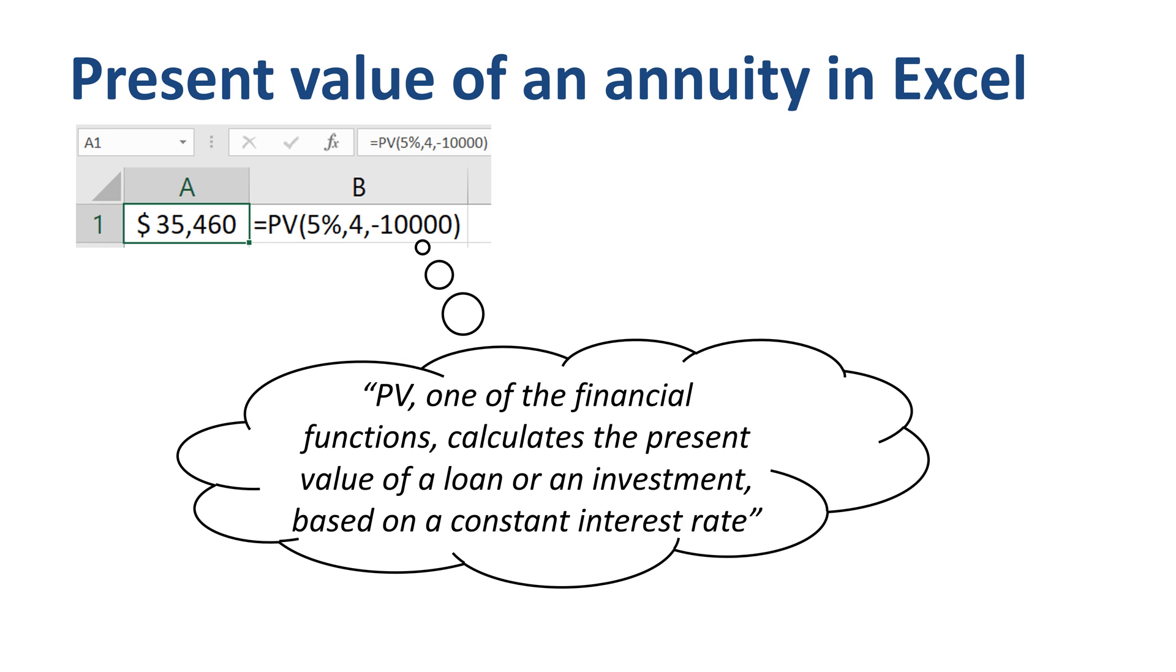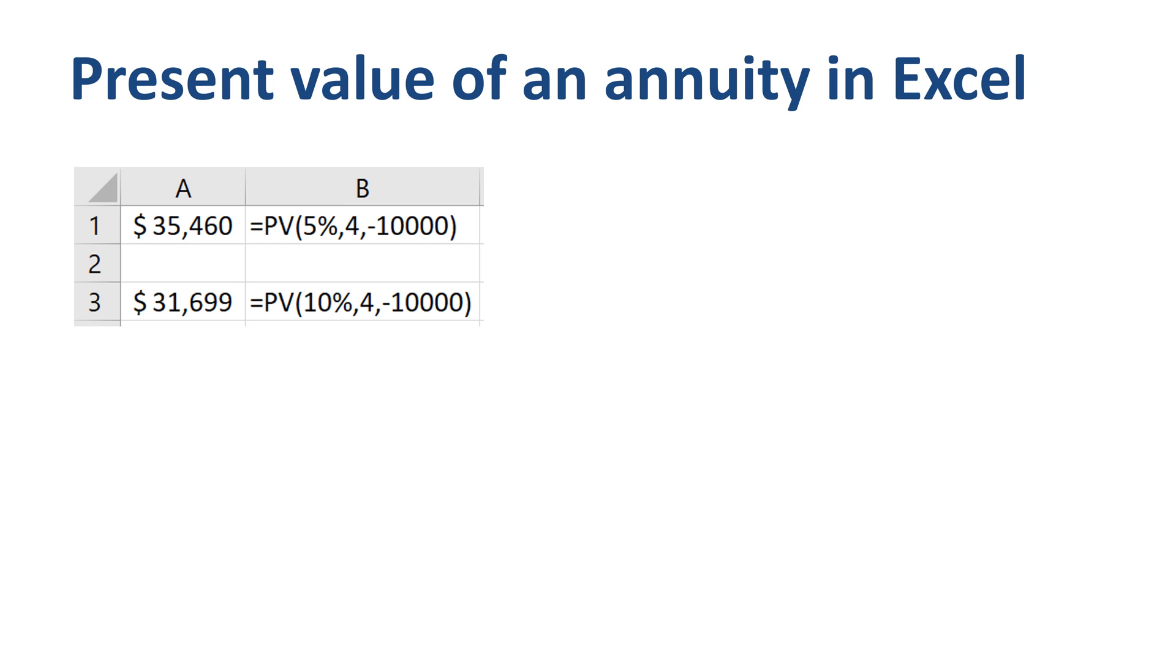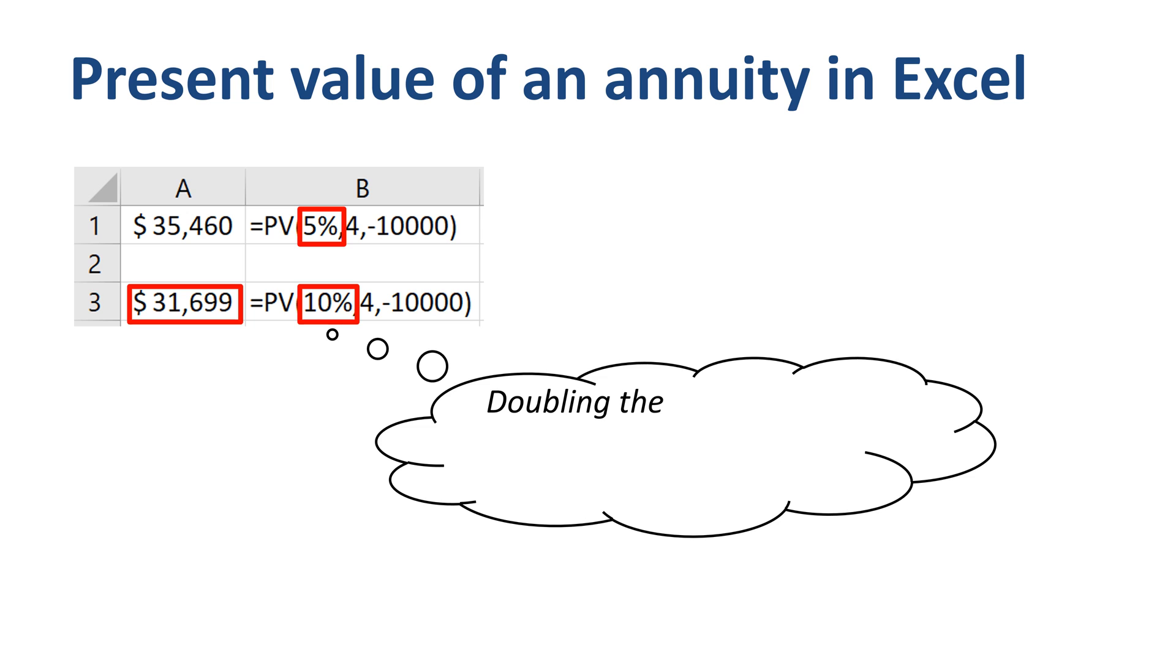The great thing about calculating the present value of an annuity in Excel is that you can quickly run some scenarios to see the sensitivities of changing any of the input variables. If the interest rate is increased from 5% to 10%, then the present value of the annuity drops to nearly $31,700. The bag of money needed today is 11% smaller, 31.7K instead of 35.5K, in the case of doubling the interest rate, while the payments in the future stay at the same level. An increase of the interest rate is beneficial to the receivers of the future payments, and costly to the payers.